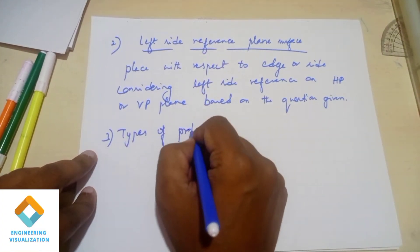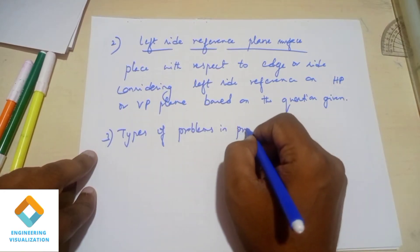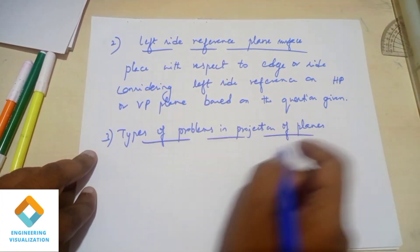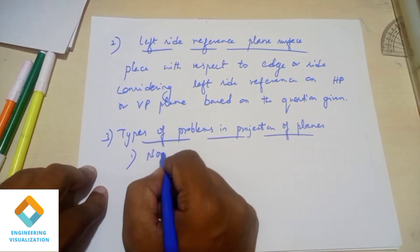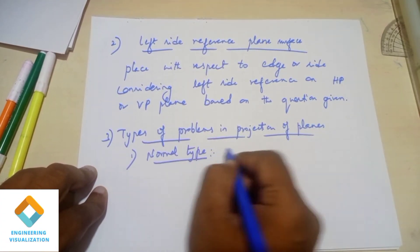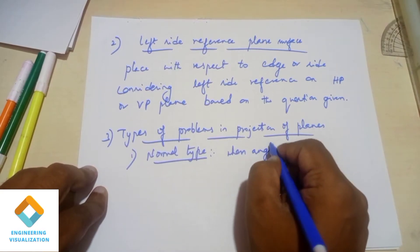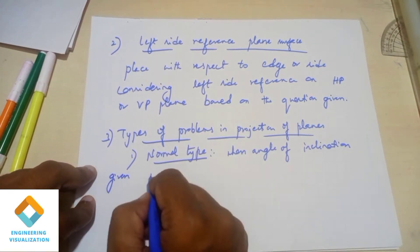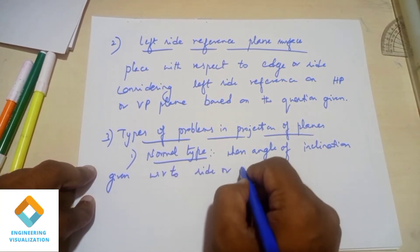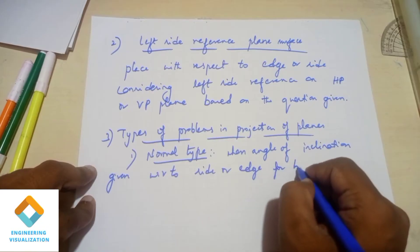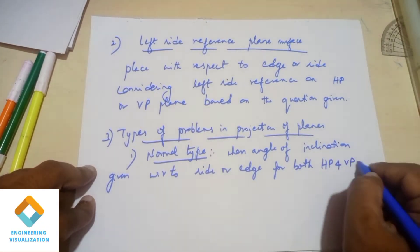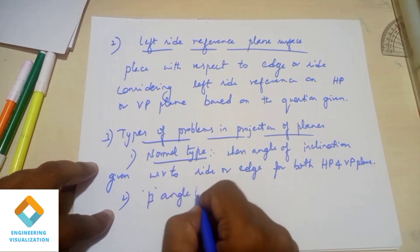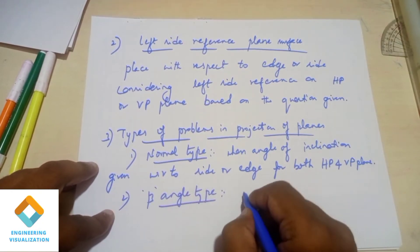Next, types of problems. This model is very easy and is actually a scoring model - projection of planes is very easy. The first problem type is the normal type problem. Normal type problem involves angle of inclinations with HP and VP plane with respect to edge - edge angle of inclination, edge or VP side or edge. That is your normal type problem.